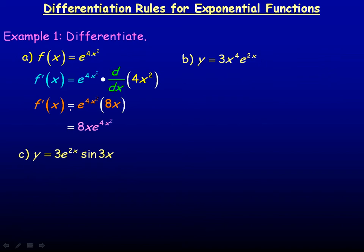The reason for writing it that way is because if you aren't careful, for example if you wrote e to the 4x squared and didn't write the 8x on the same horizontal level, somebody might think it should be e to the 32x cubed. But the 8x is multiplied by the entire function, not just the 4x squared exponent. So this is a less ambiguous way to write it.